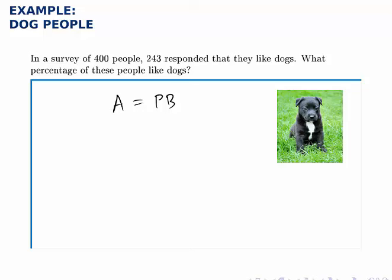So in this case we're asking 243 is what percentage of 400? So to solve for P, the percentage which we're looking for, simply divide both sides by 400. And we can plug this into our calculator. We find that 243 divided by 400 is 0.6075. That equals P.